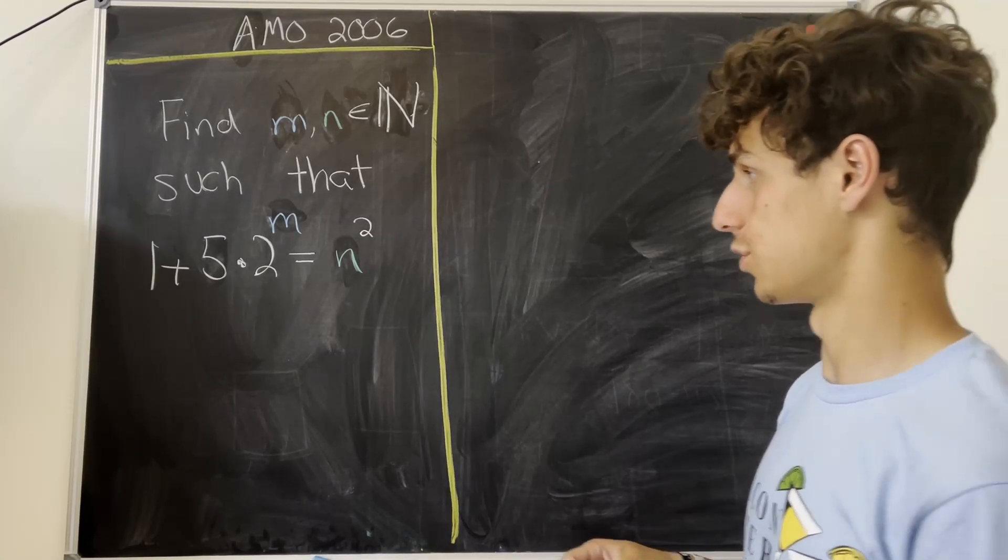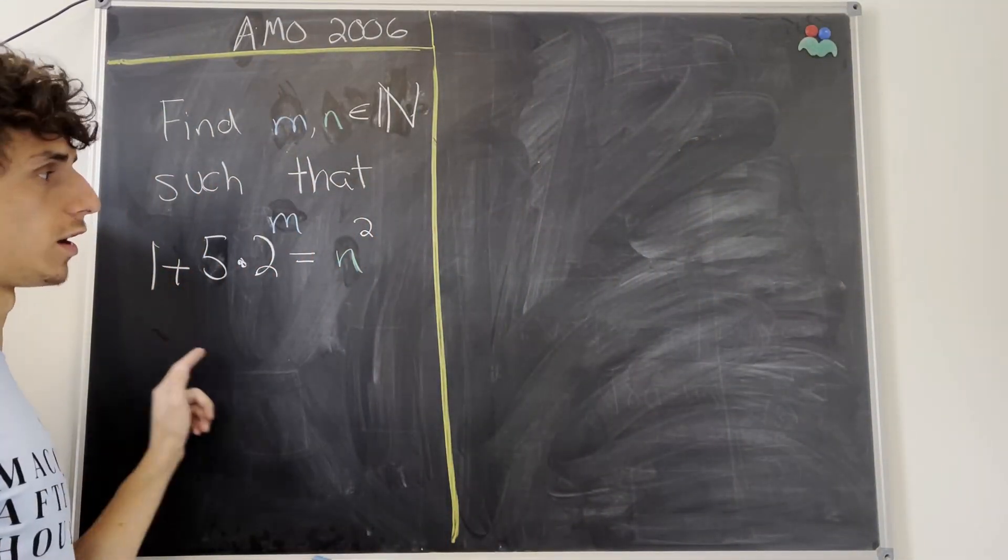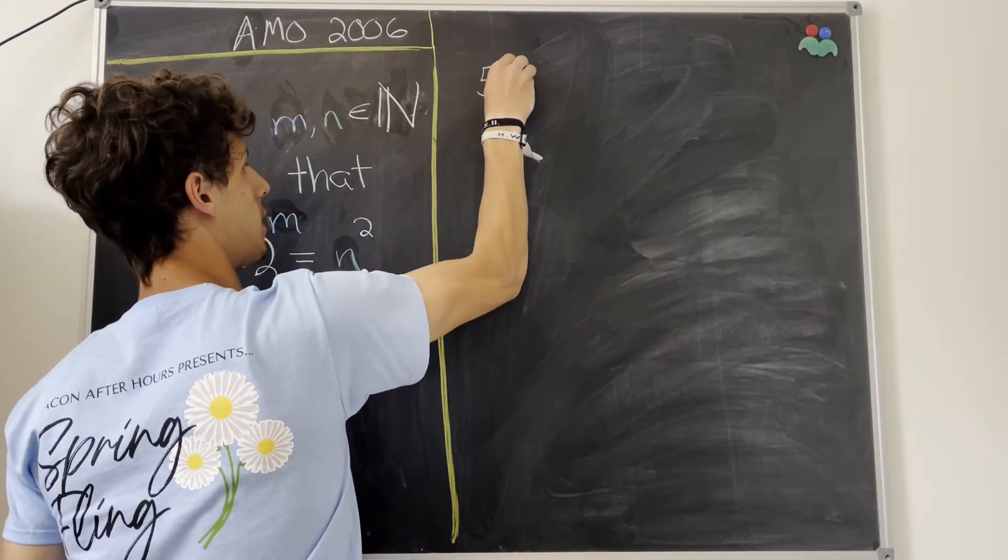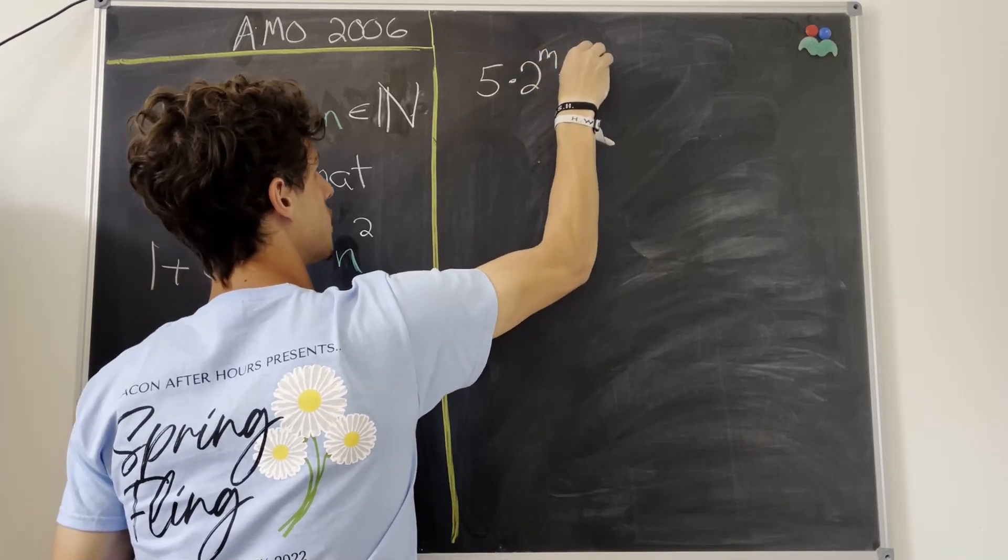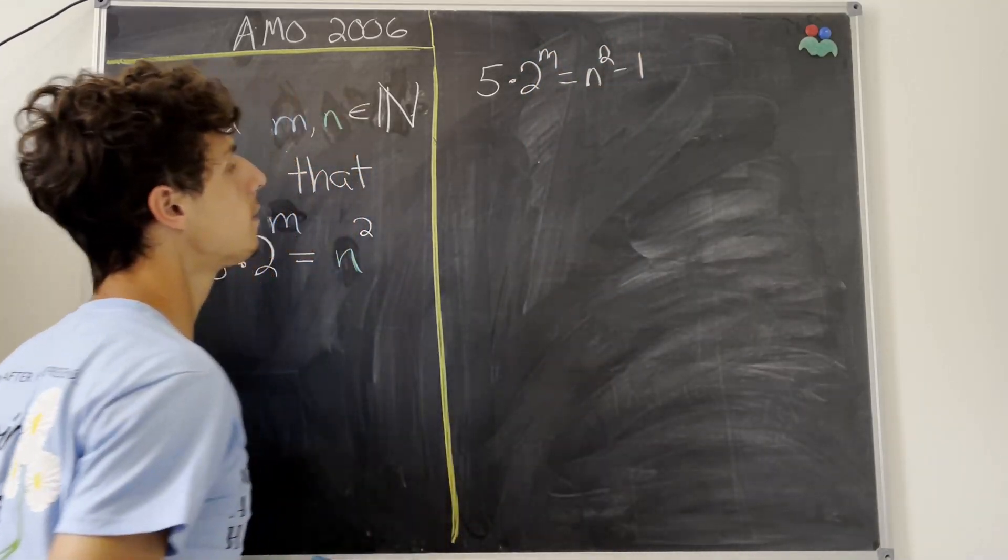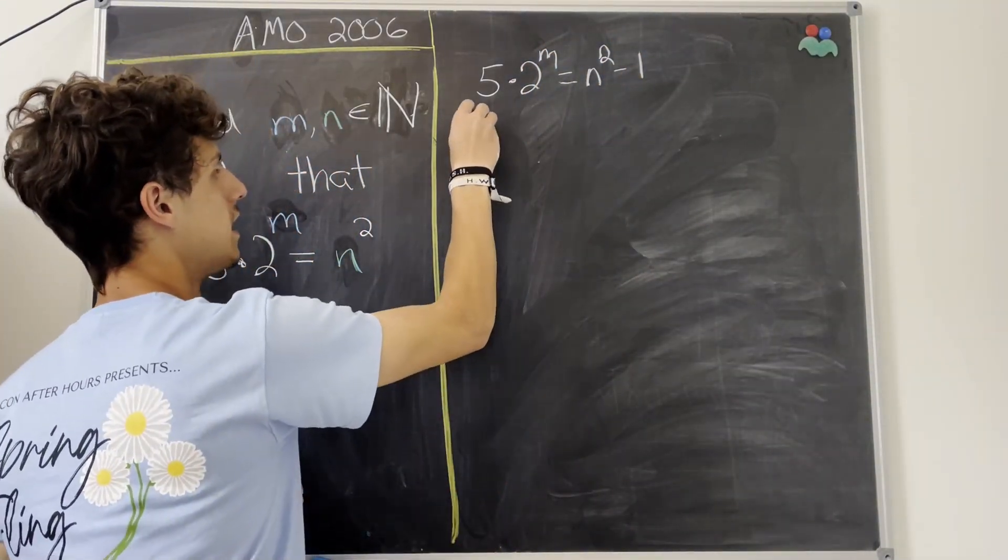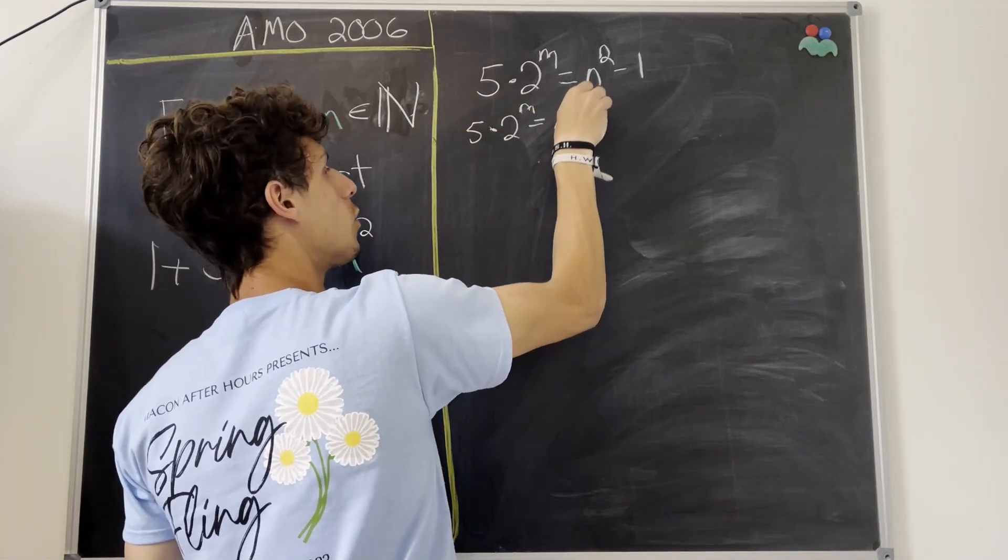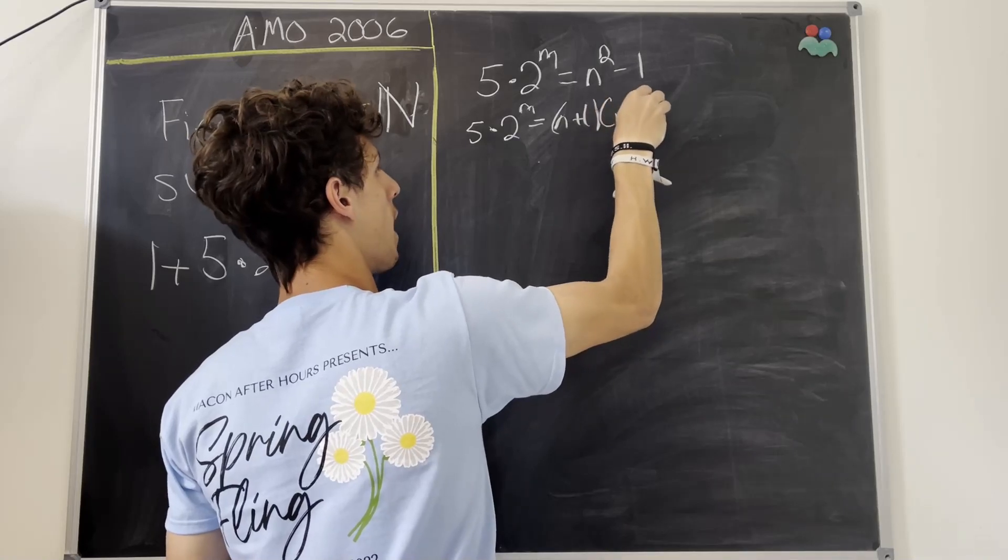So let's jump into the solution. First we want to move this 1 across and pair it with this n squared. So we'll have 5 times 2 to the m equals n squared minus 1. But now this right-hand side factors pretty nicely. We'll have 5 times 2 to the m equals n plus 1 times n minus 1.